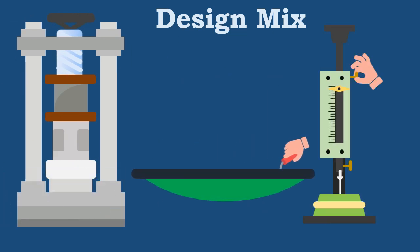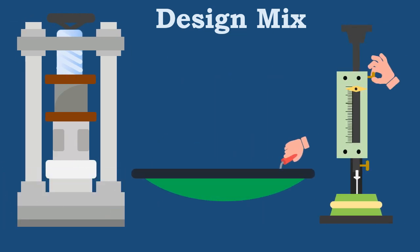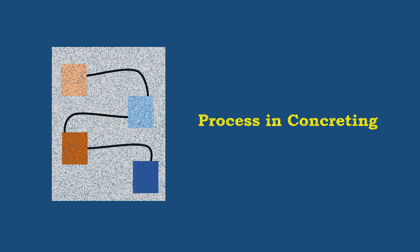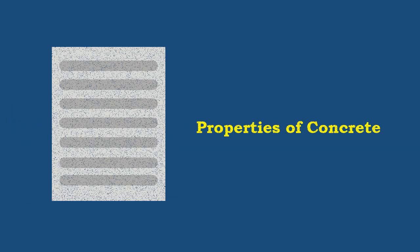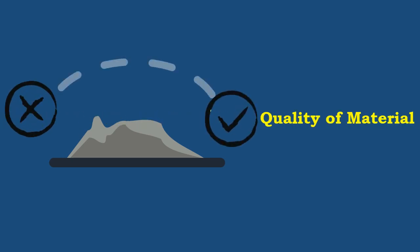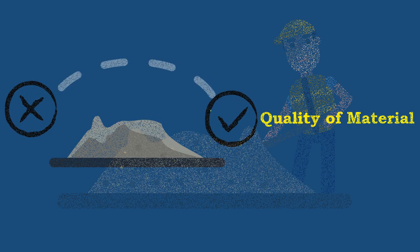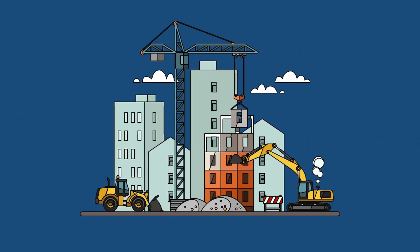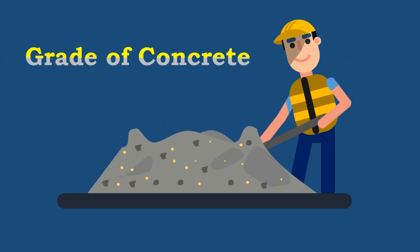Design mix concretes are those whose mix ratio proportions are obtained from various lab tests, by considering the various processes in concreting, properties of concrete, and quality of materials used. Grades such as M30 and above come under design mix. Design mixes are generally used for the construction of large structures. That's all about grades of concrete.